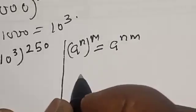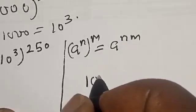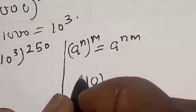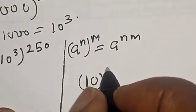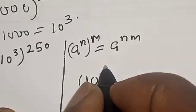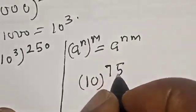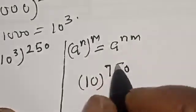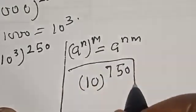Now we have 10 raised to power 3 times 250, that is 750. So the answer is 10 raised to power 750. This is our final answer.